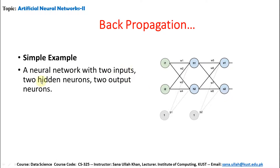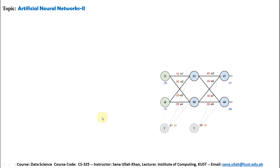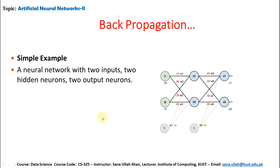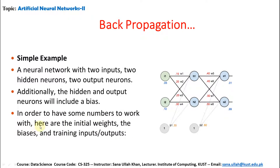A neural network with two inputs, two hidden neurons, two output neurons. The hidden and output neurons include bias values. The initial weights are: w1=0.15, w2=0.20, w3=0.25, w4=0.30, w5=0.40, w6=0.45, w7=0.50, w8=0.55. The bias values are also given. The target outputs are: output1 = 0.01 and output2 = 0.99.